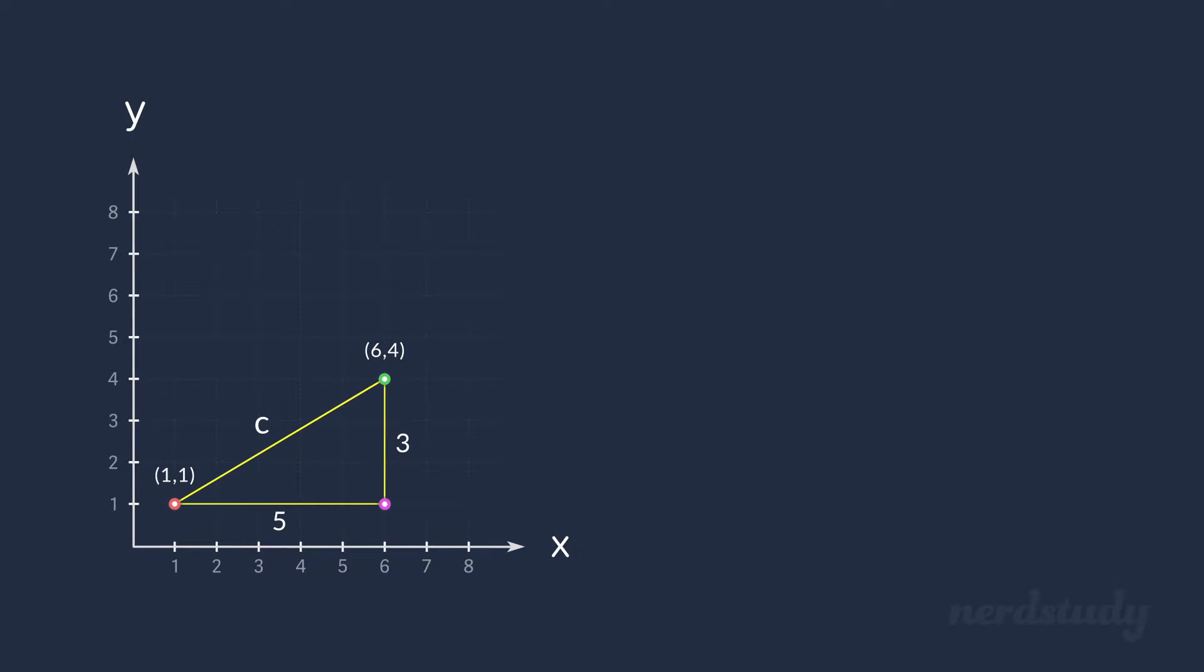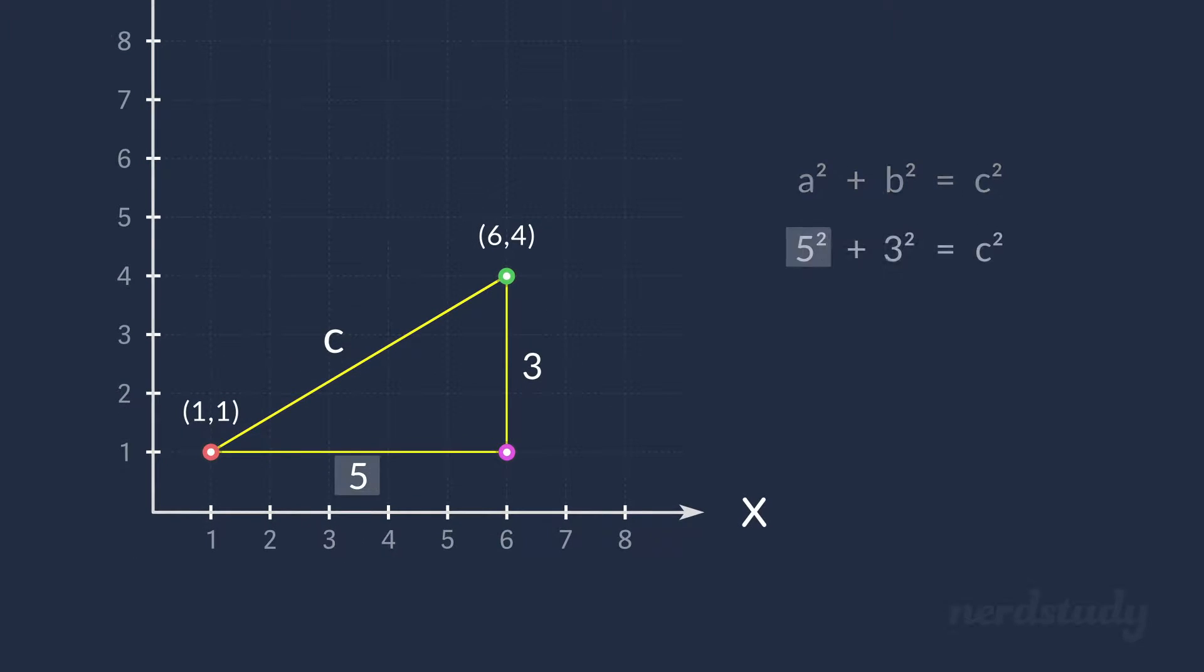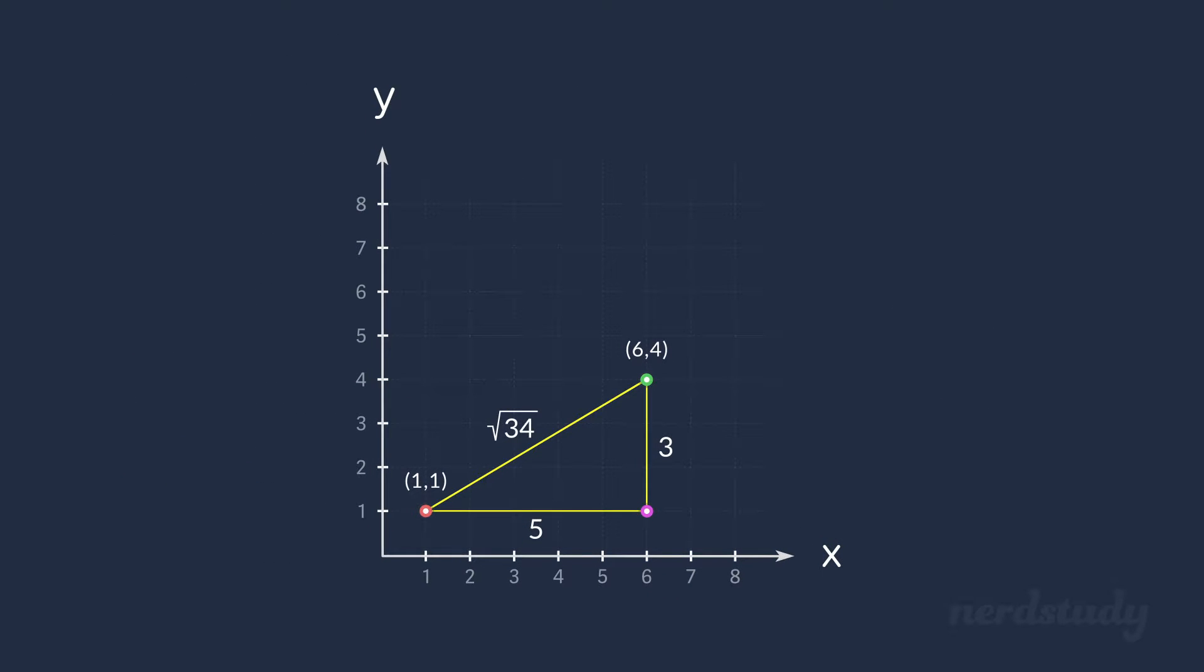Now let's pull up the Pythagorean theorem here. So what we have is 5 squared plus 3 squared equals c squared. What we get is 25 plus 9 equals c squared. If we simplify this down a few steps, we end up getting c equals square root 34. The length of this line, therefore, is the square root of 34.